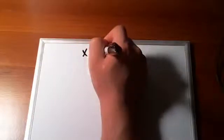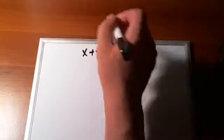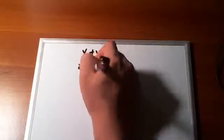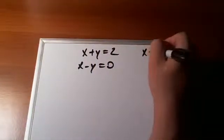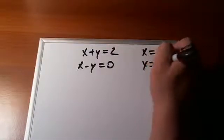If we go back and look at our very first example, x plus y is equal to 2 and x minus y is equal to 0. If you remember, we said x is equal to 1 and y is equal to 1.